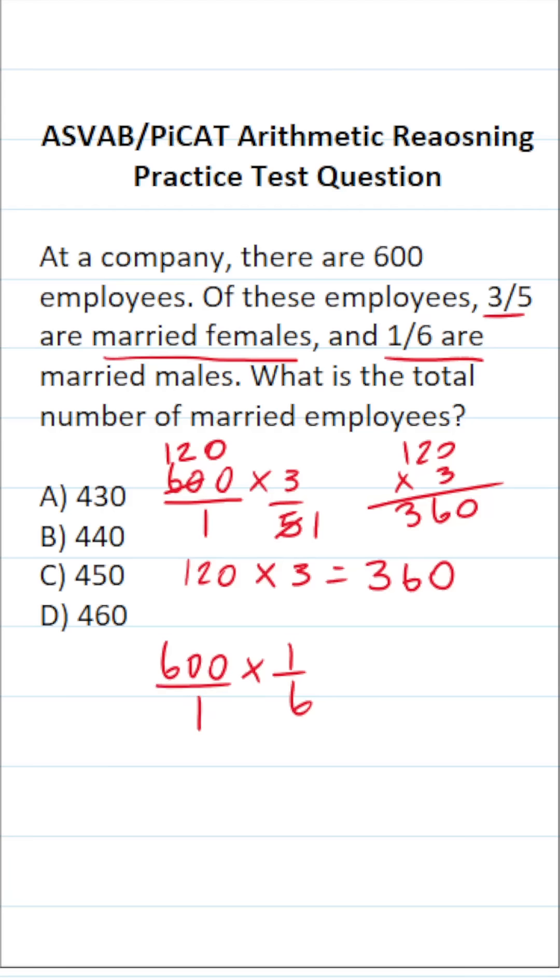Now I'm going to cross-reduce. I can say 6 goes into 6 one time. 6 goes into 600 100 times. This becomes 100 over 1, which is 100 times 1 over 1, which is 100.